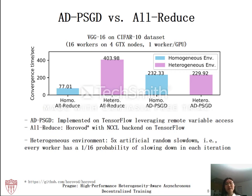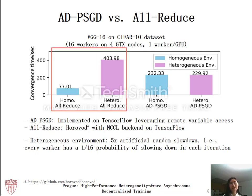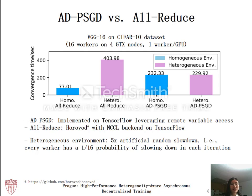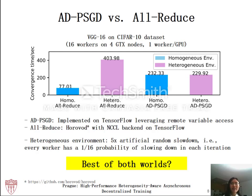Let's look at how ADPSGD performs compared with allreduce. We implemented both algorithms on TensorFlow. We show their performance in homogeneous and heterogeneous environments. To model heterogeneity, we injected five times random slowdown — in each iteration, a worker has a probability of one over the total number of workers to slow down five times. The results show that allreduce is greatly affected by random slowdown, while ADPSGD is barely affected. However, ADPSGD's performance is not as good as allreduce when there are no stragglers, due to the heavy synchronization cost incurred by atomic model averaging. The open question is: can we design an algorithm that performs as well as allreduce in homogeneous environments and still tolerates stragglers well, like ADPSGD?